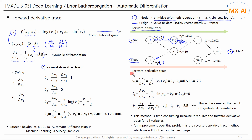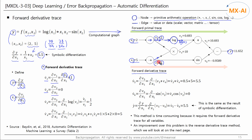Now let's follow the red forward derivative trace to find the partial derivative with respect to x1. The partial derivative of y with respect to x1 is denoted y-dot, and the partial derivative of vi with respect to x1 is denoted vi-dot. By definition, v1-dot is the partial derivative of v1 with respect to x1. Since v1 is x1, v1-dot equals 1. V2-dot is the partial derivative of v2 with respect to x1; since v2 is independent of x1, v2-dot is 0.